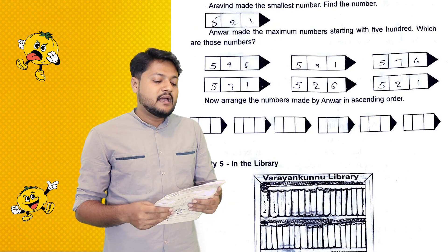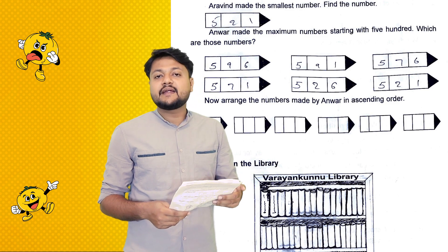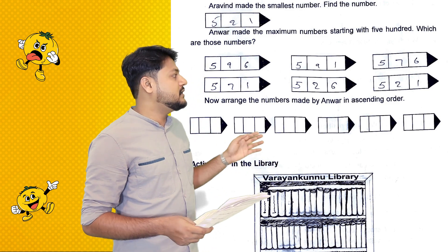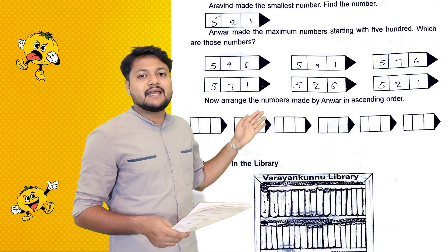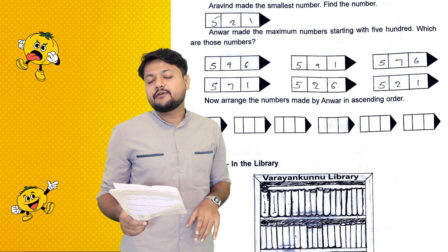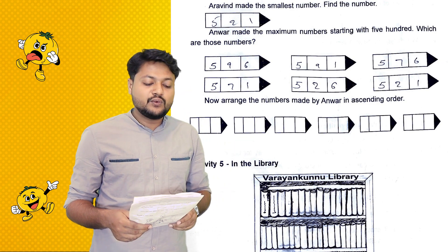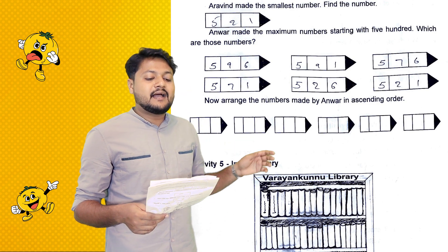Vimela made the smallest three-digit number. Find the number. Vimela made the smallest number: 521.